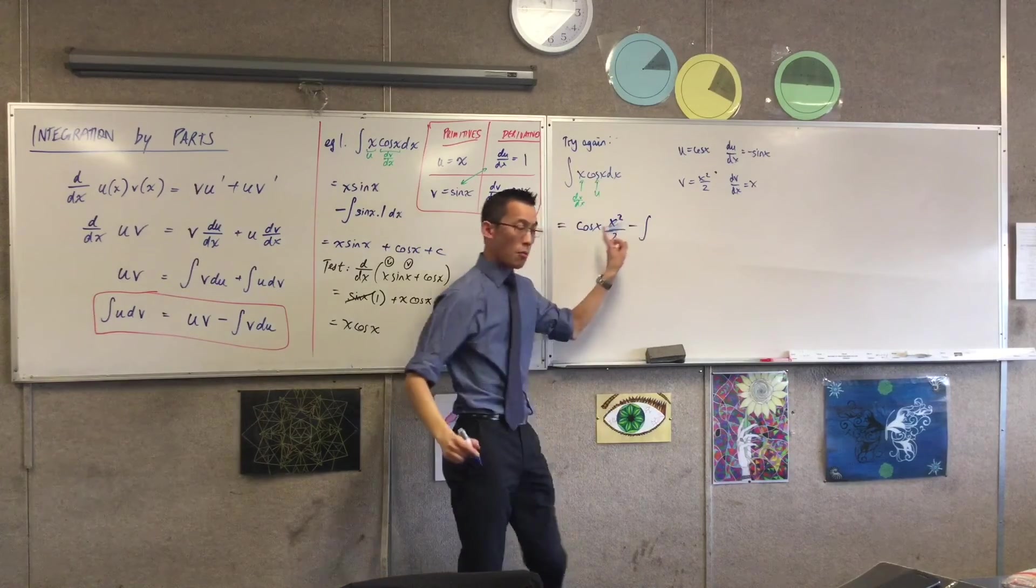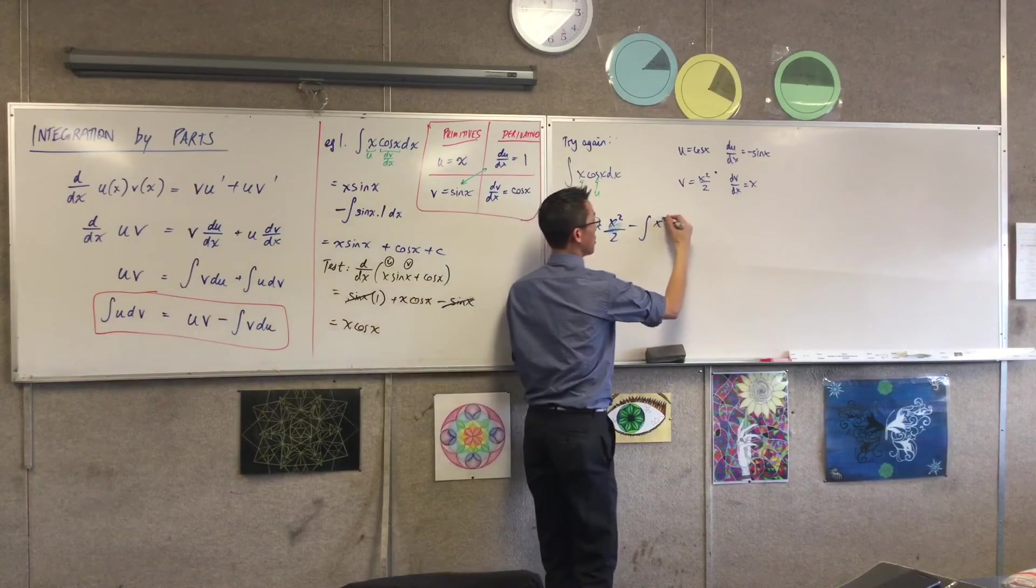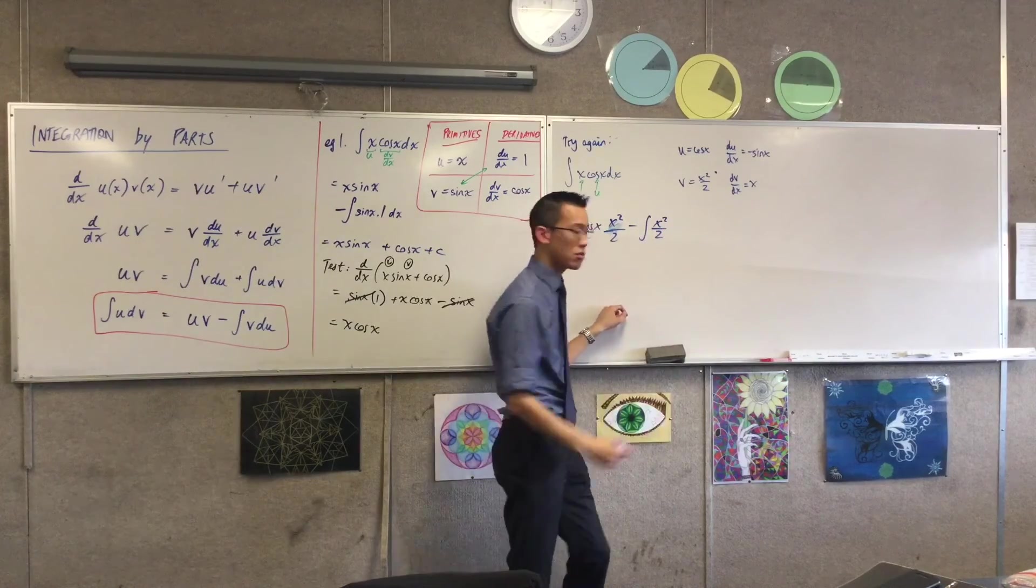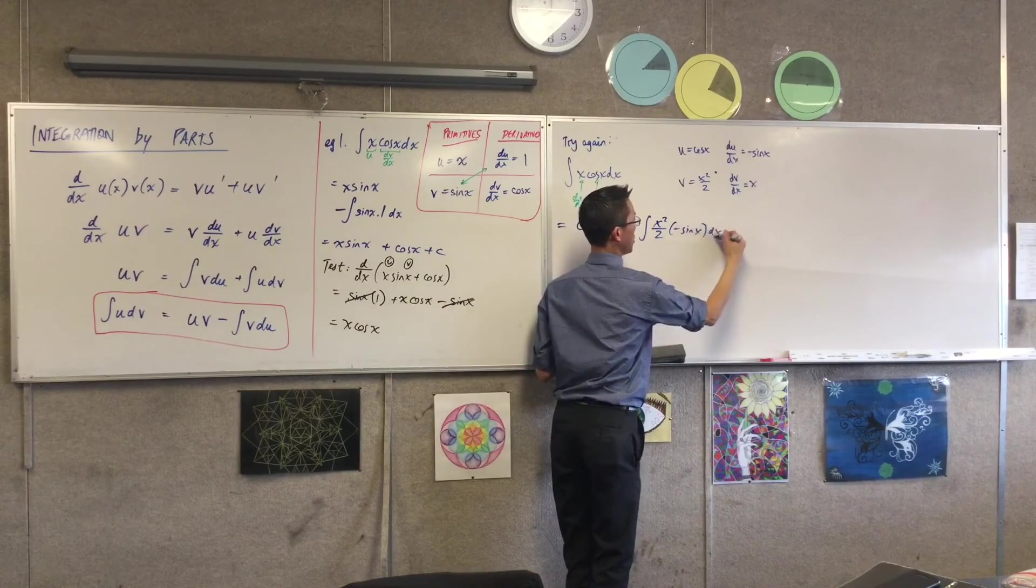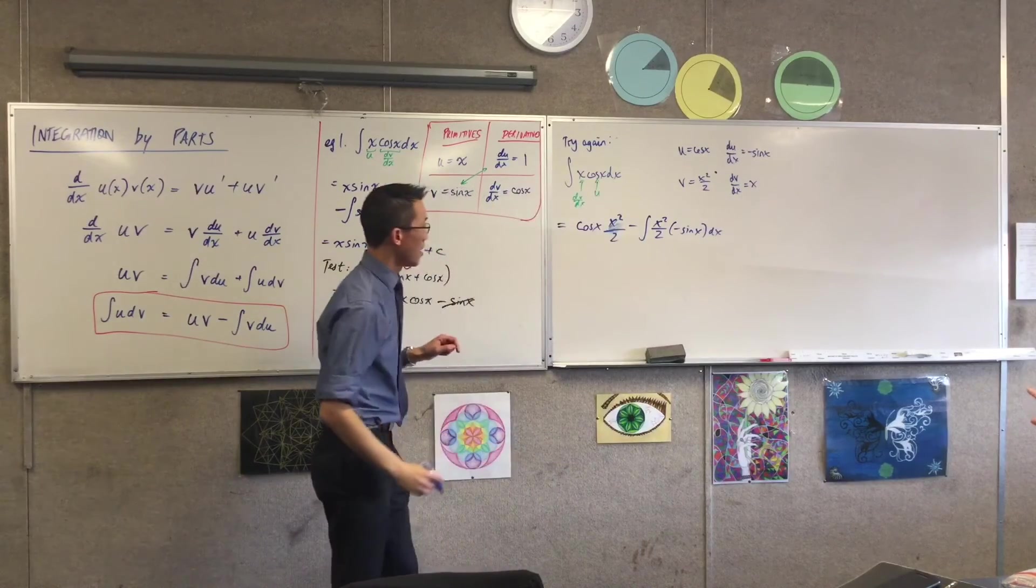Minus the integral of v, which is x squared on two, times du, which is minus sin x dx. You see that? Basically something worse than that. Now, you look at that, just to clarify that, and you're like, wait.